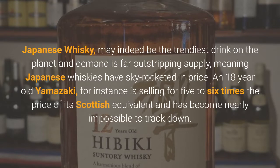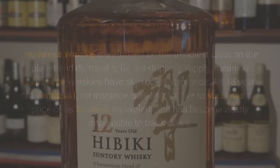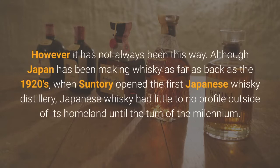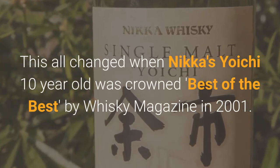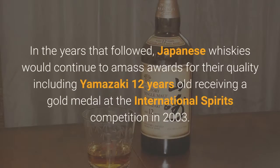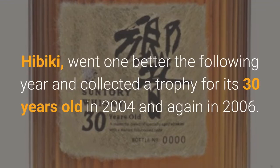Japanese whisky may indeed be the trendiest drink on the planet, and demand is far outstripping supply, meaning Japanese whiskies have skyrocketed in price. An 18-year-old Yamazaki, for instance, is selling for five to six times the price of its Scottish equivalent and has become nearly impossible to track down. Although Japan has been making whisky as far back as the 1920s, when Suntory opened the first Japanese whisky distillery, Japanese whisky had little to no profile outside of its homeland until the turn of the millennium. This all changed when Nikka's Yoichi 10-year-old was crowned Best of the Best by Whisky Magazine in 2001. In the years that followed, Japanese whiskies continued to amass awards, including Yamazaki 12 years old receiving a gold medal at the International Spirits Competition in 2003. Hibiki went one better the following year, collecting a trophy for its 30-year-old in 2004 and again in 2006.